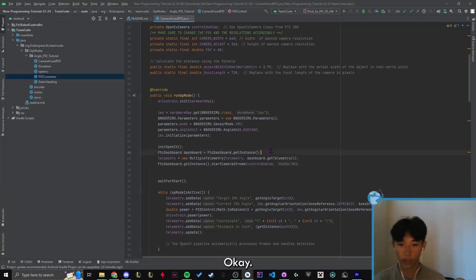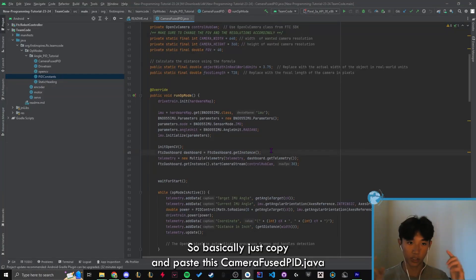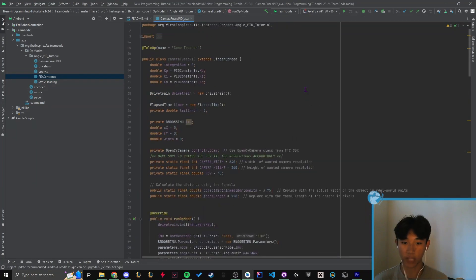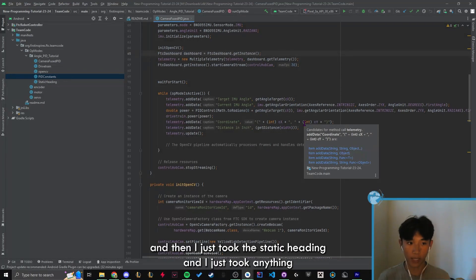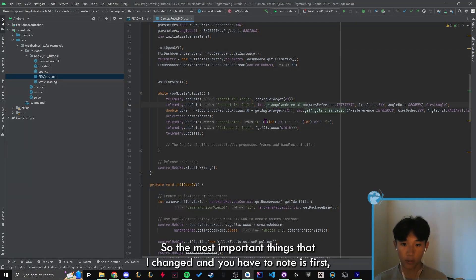Okay, so basically just copy and paste this CameraFusePID.java. So what it is, is I literally took the OpenCV code, I pasted it into here, and then I just took the static heading and anything that has to do with PID and I pasted it in here.